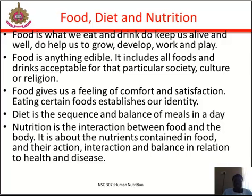A nutrient is an active chemical component in food that plays a specific structural or functional role in the body. Sugars, starches and fibers are often grouped together as they are all carbohydrates. Vitamins and minerals are needed in very small amounts and are called micro-nutrients. Almost all foods are a mixture of nutrients. They contain different amounts of sugar, starch, fiber, fat, protein, minerals, vitamins and water.